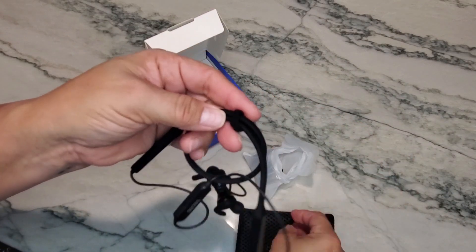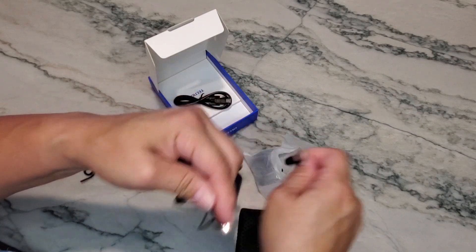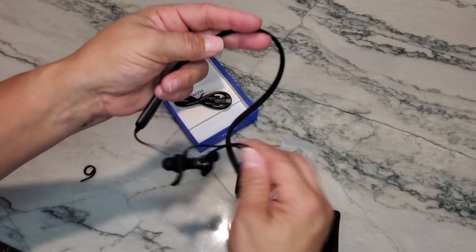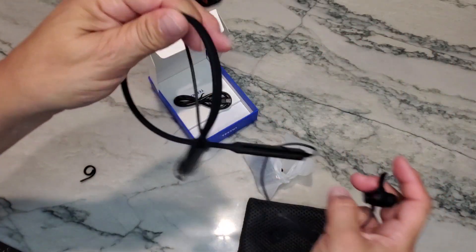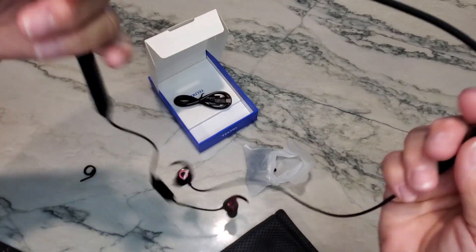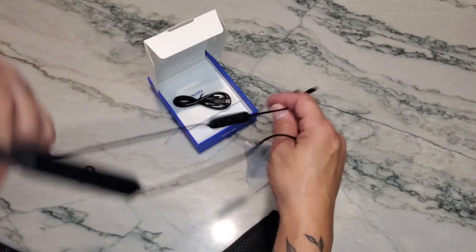Velcro to hold your cord together. These are actually going to be the headphones themselves. When you're wearing them, this back part is going to go around the back of your neck, and then this is actually going to come forward and fit into your ears.